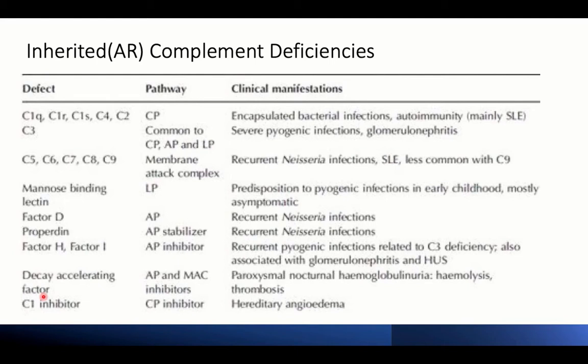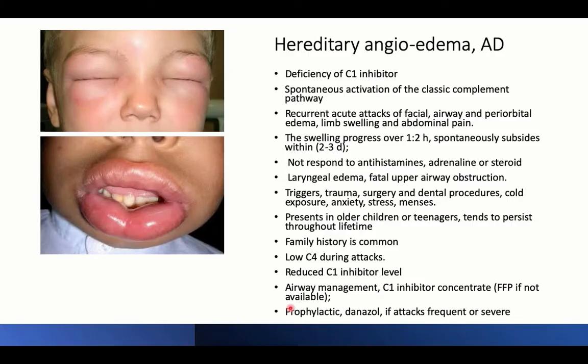C1 inhibitor is also a regulator of complement. Its deficiency presents with hereditary angioedema — not an immune deficiency syndrome, but a hereditary condition carrying an autosomal dominant mutation, so a family history is common. Deficiency of this regulator results in spontaneous activation of the classic complement pathway.